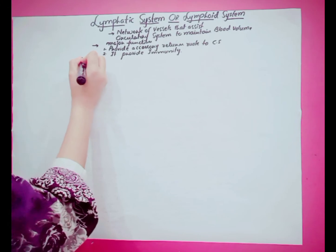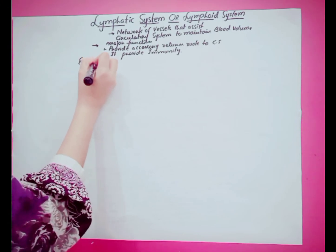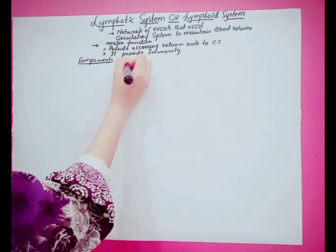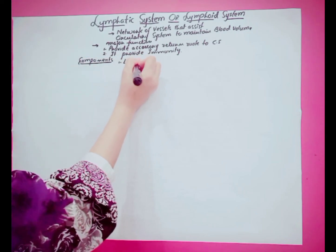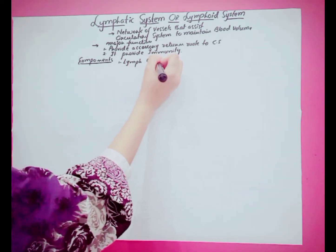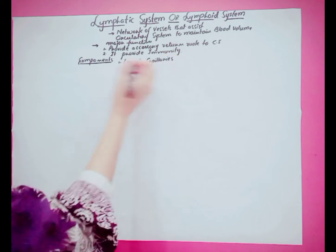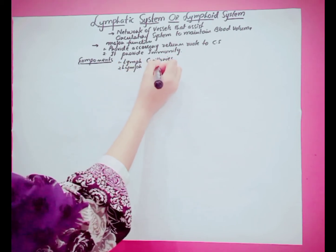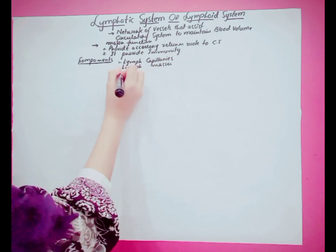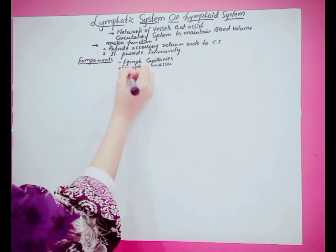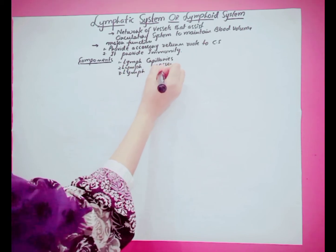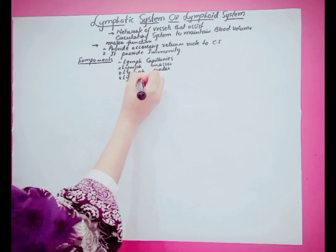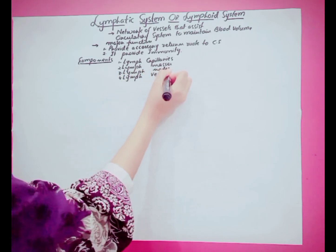What are the components of the lymphatic system? They contain lymph capillaries, lymph masses, lymph nodes, lymph vessels, and lymph.